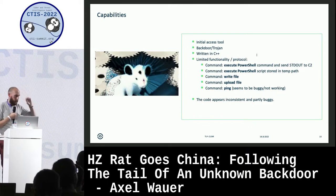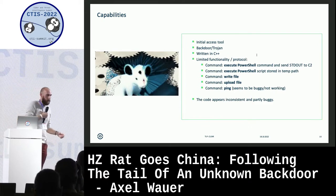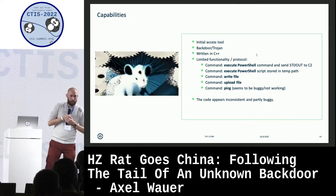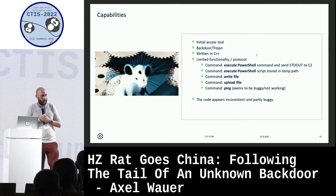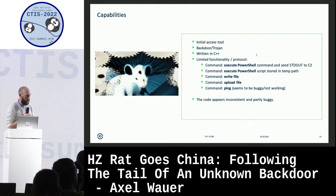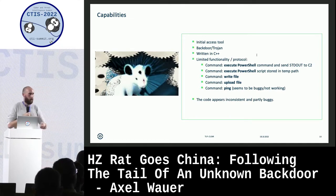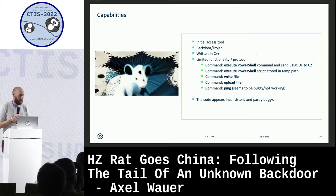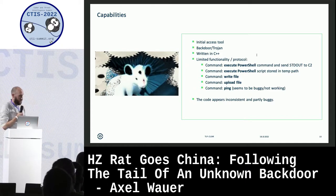Johan started putting it into IDA and reversing it. We can say it's an initial access tool, backdoor or Trojan, written in C++, with limited functionality. It can execute PowerShell commands received from the C2 server, replying with stdout back to the C2 server. It can also execute a PowerShell script stored on the client, write files, upload files, and theoretically ping the C2 server - but the ping is buggy and the whole code appears very inconsistent.